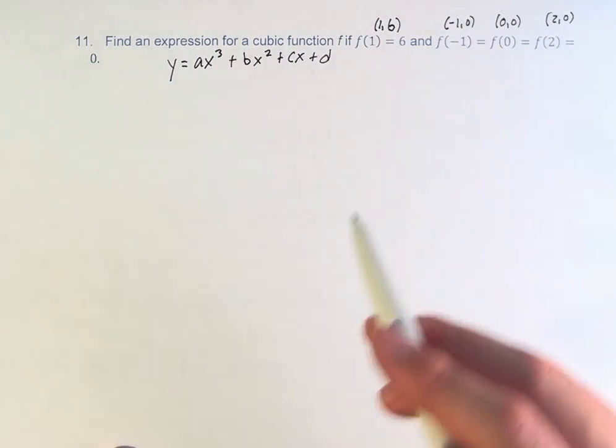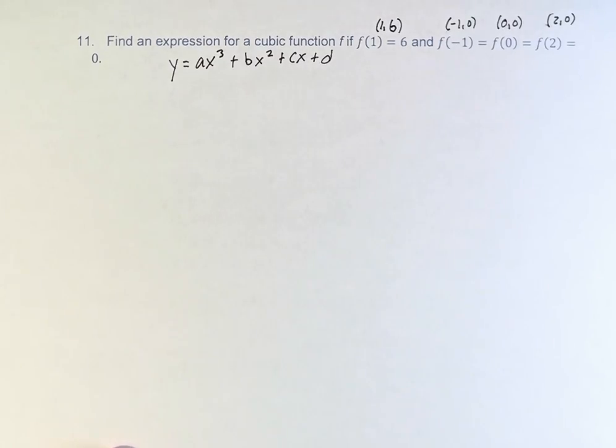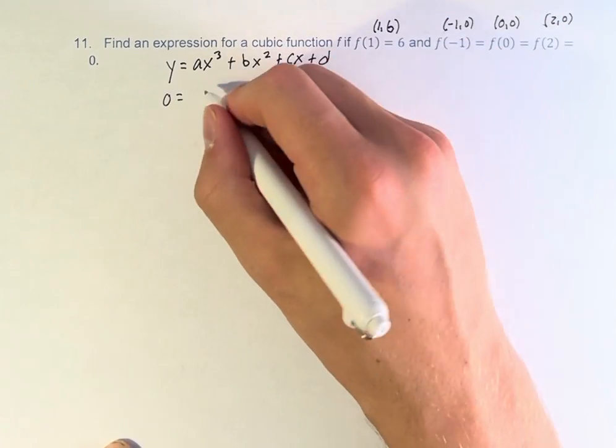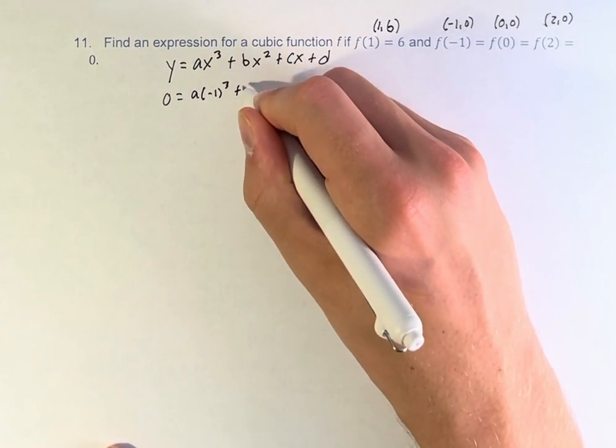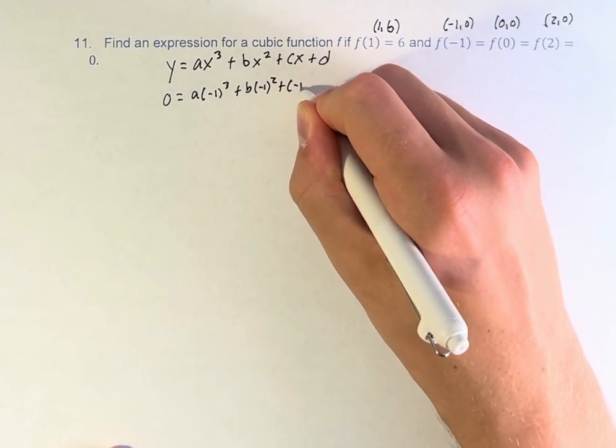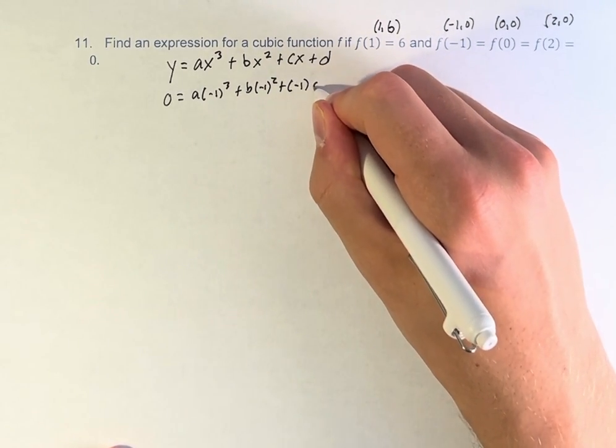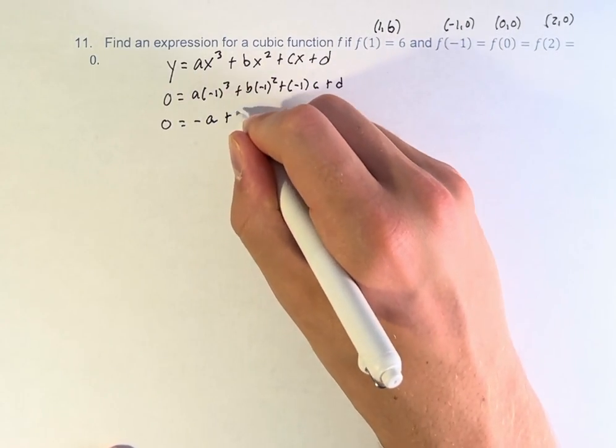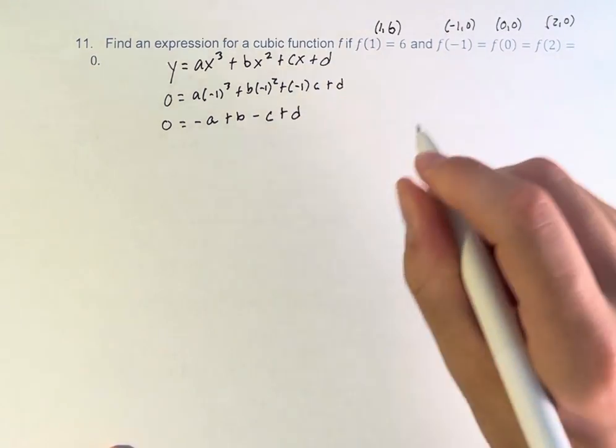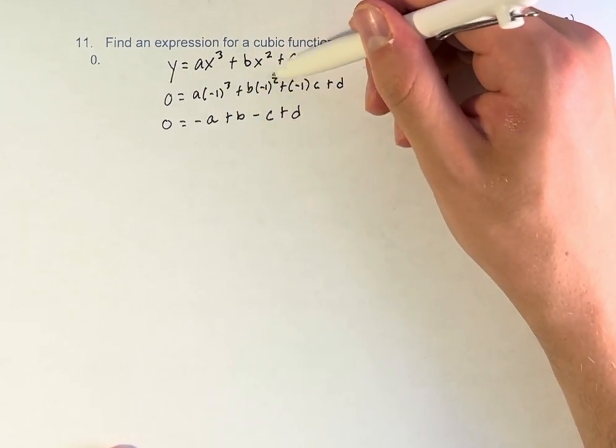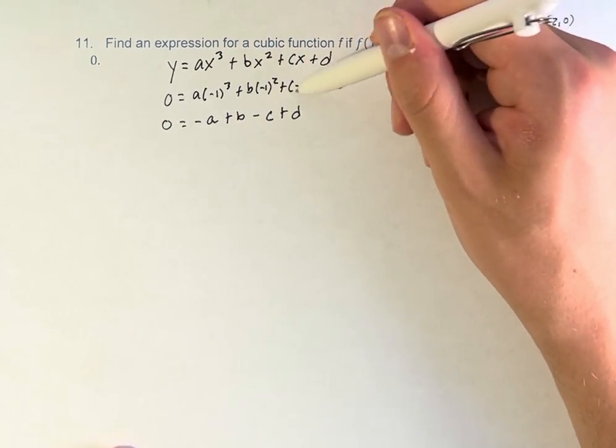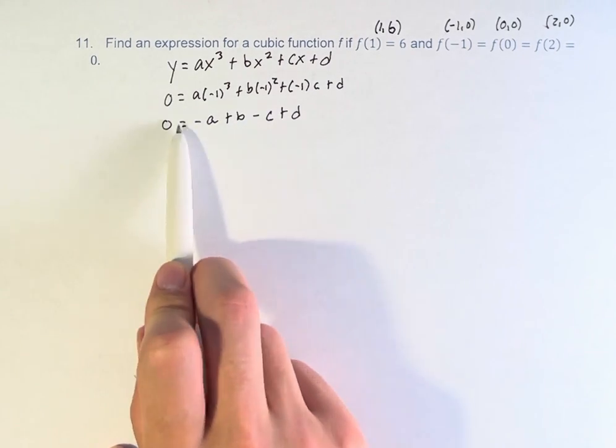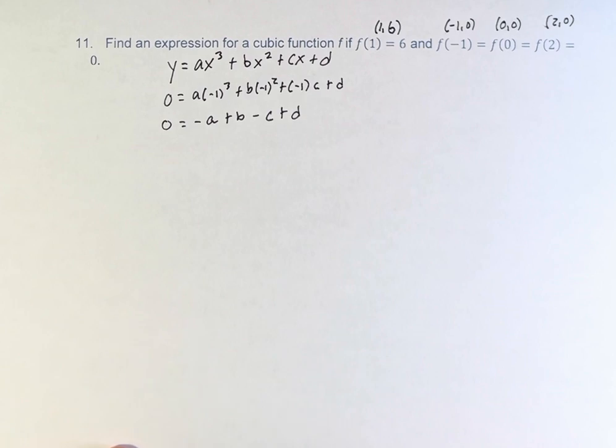So let's plug these in. I think starting with the ones with a lot of zeros in them is going to be easier. y is equal to 0, x is equal to negative 1. So, a times negative 1 cubed plus b times negative 1 squared plus c times negative 1 plus d. 0 is equal to negative a plus b minus c plus d. Now, this is an equation with our constants, and we can create more of these and then have a system which we can solve.